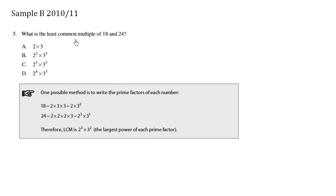What is the LCM, the least common multiple of 18 and 24? One possible method is to write the prime factors of each number. So we have the number 18, and we break it down to all its prime factors, 2 times 3 times 3, which we summarize and group those threes using exponents.